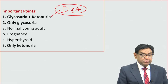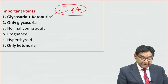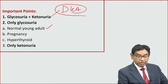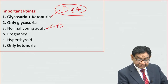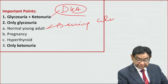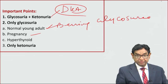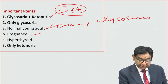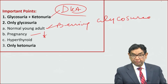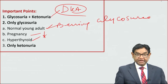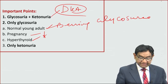However, glycosuria alone can be seen in young adults — so-called benign glycosuria. It can also be seen in pregnancy due to a reduced renal threshold for glucose absorption. It can also be seen in hyperthyroidism, which will be discussed in the next slides.